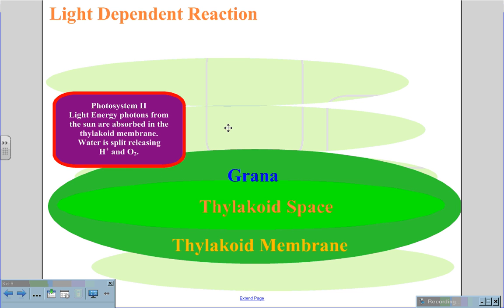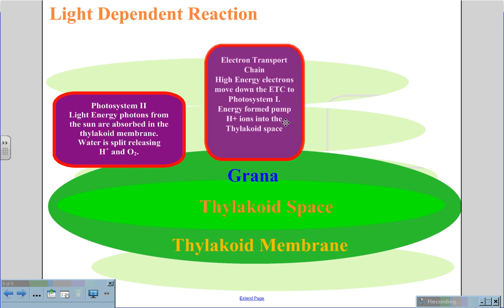The hydrogen then goes through the electron transport chain, where high energy electrons move down this ETC, and creates the hydrogen ions in the thylakoid space.